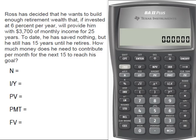So Ross has decided that he wants to build enough retirement wealth that if he invests his money at 6% per year, it's going to give him $3,700 in monthly income for 25 years of retirement. Problem is to date he has saved nothing. Good news is he still has 15 years until he retires. So what we need to do is figure out how much money does he need to contribute per month for the next 15 years in order to have monthly income of $3,700 for 25 years.